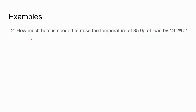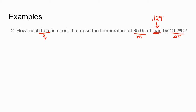Let's look at another example. How much heat — so we're looking for Q — is needed to raise the temperature of 35 grams of lead by 19.2 degrees Celsius? They've already done the subtraction, telling us the change in temperature. We have M and delta T, and since the substance is lead we can use our reference tables to get the specific heat: 0.129 joules per gram Celsius from page one.